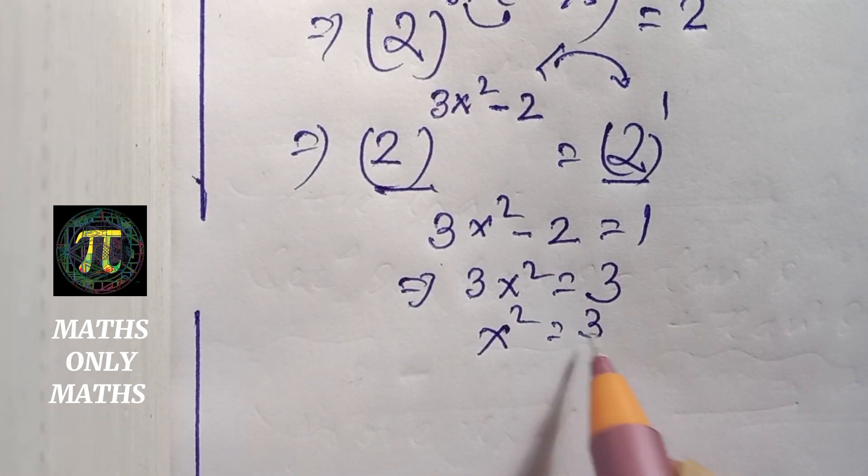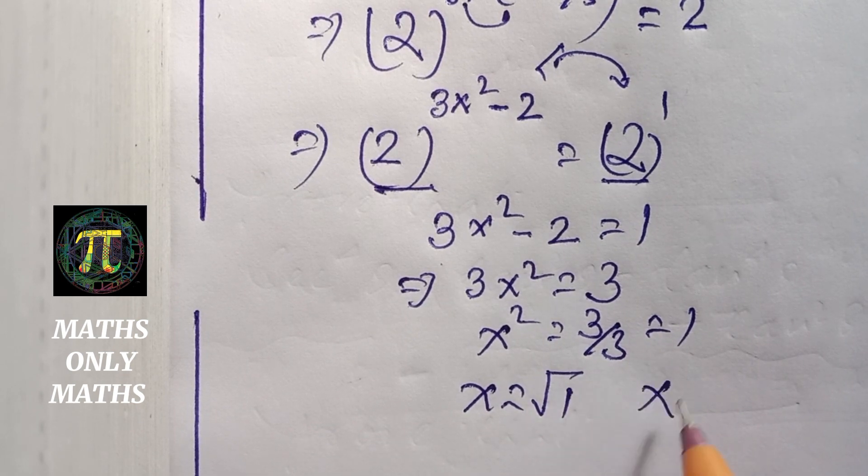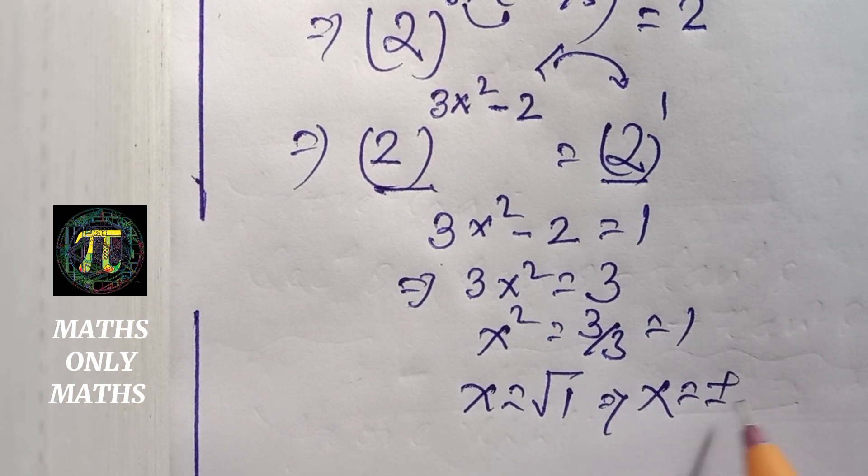x squared equals 3/3, which is 1. x equals square root of 1. Therefore, x equals plus or minus 1.